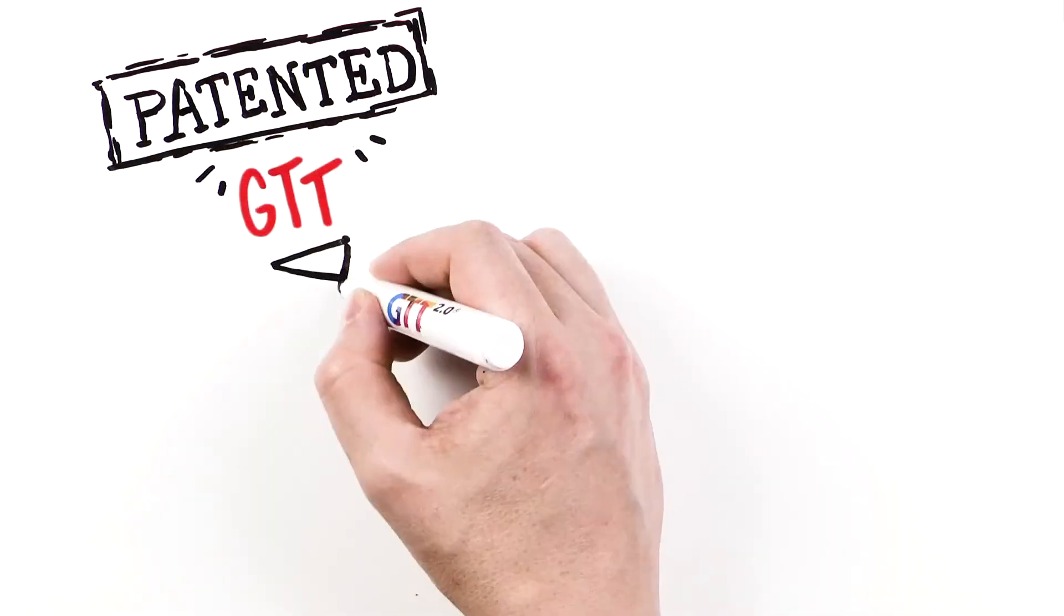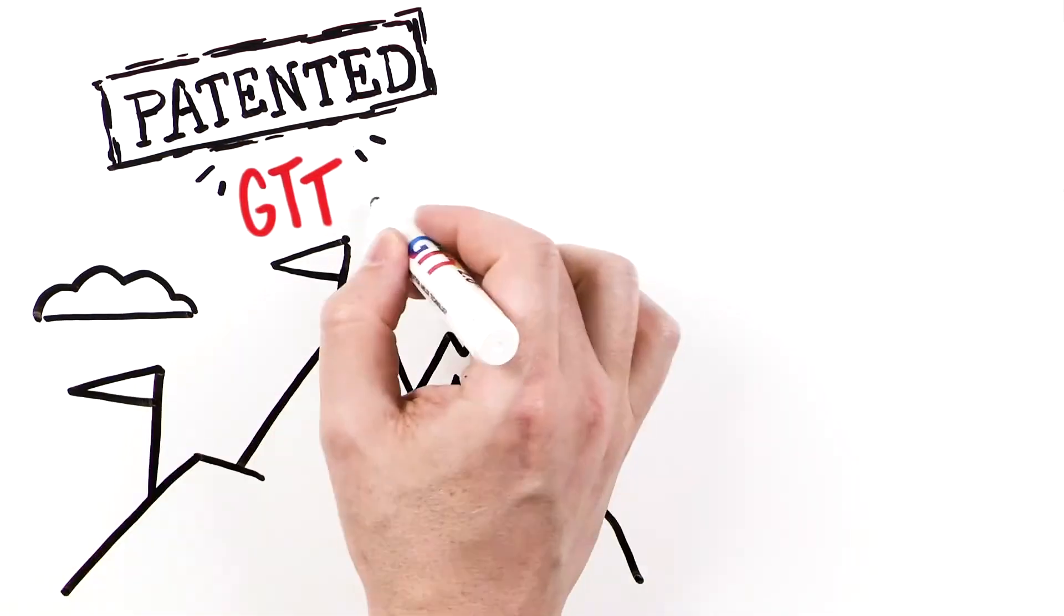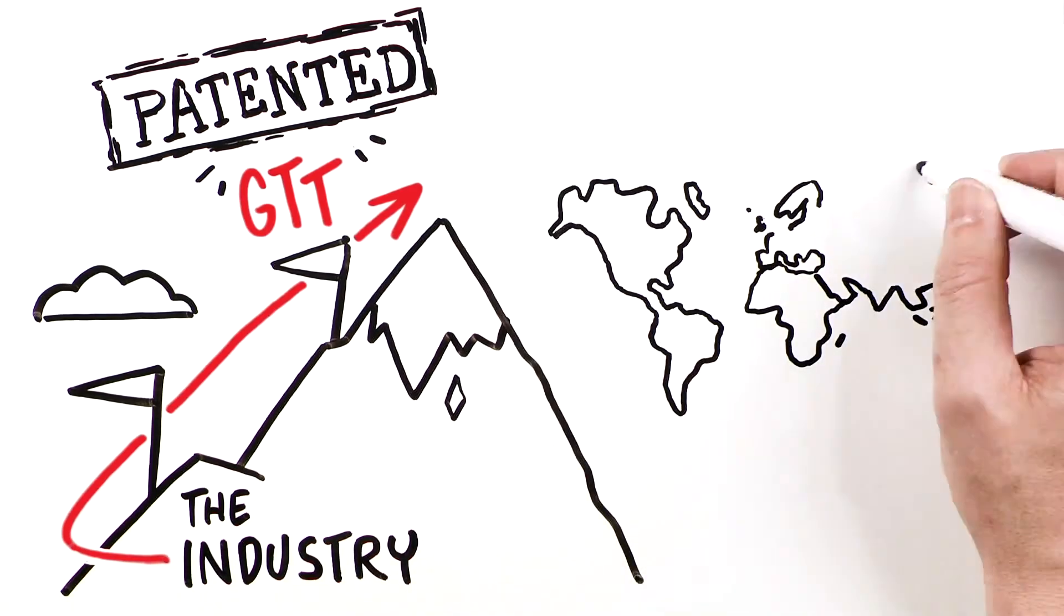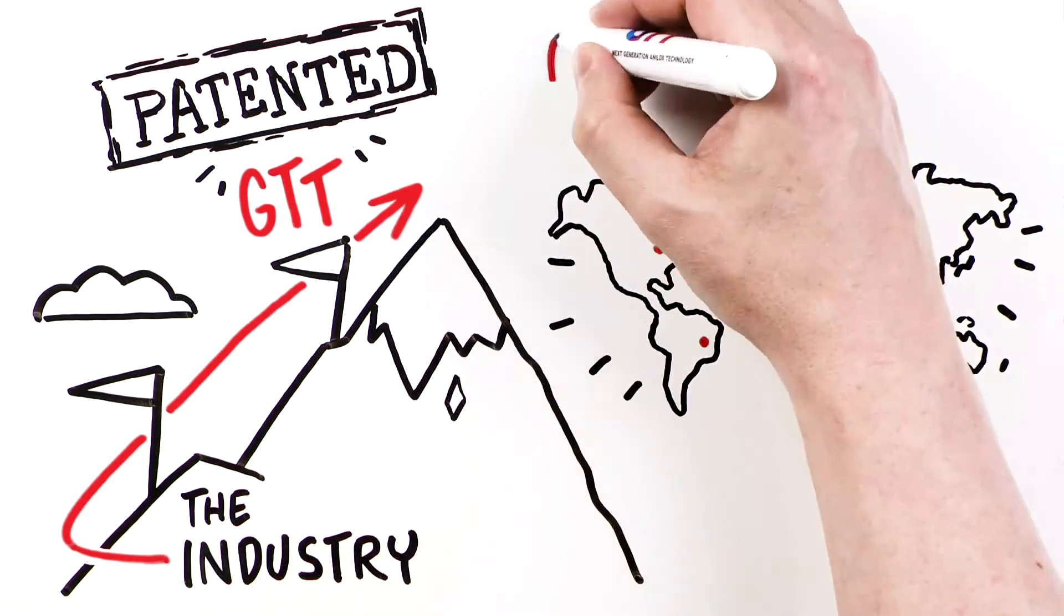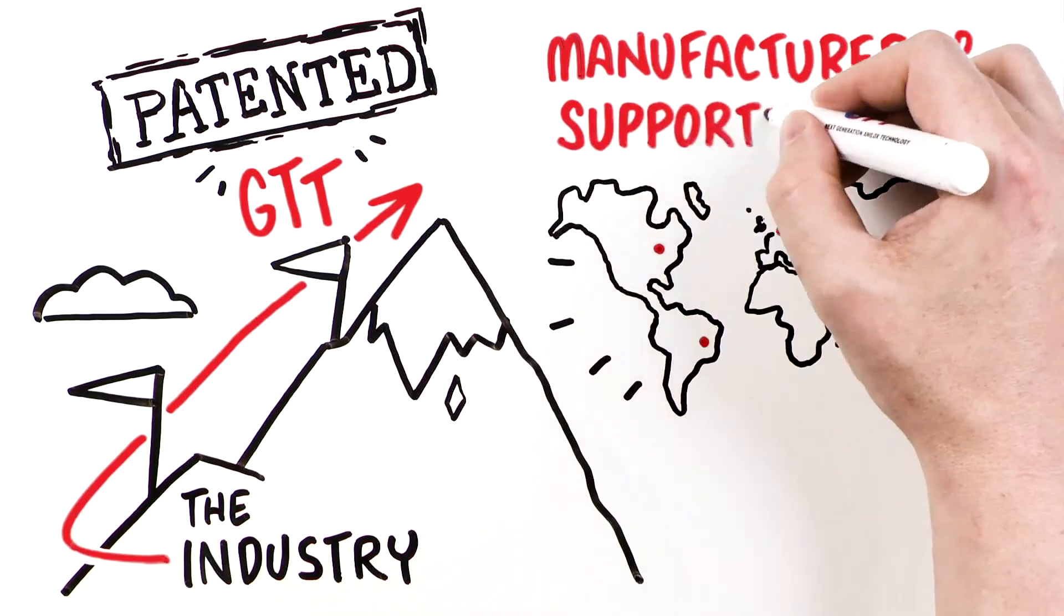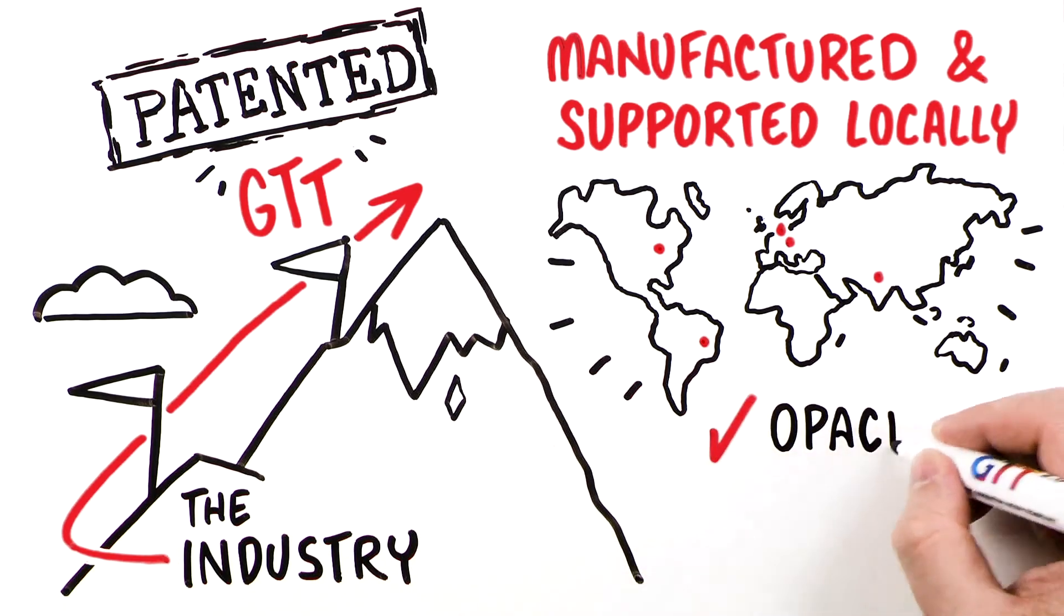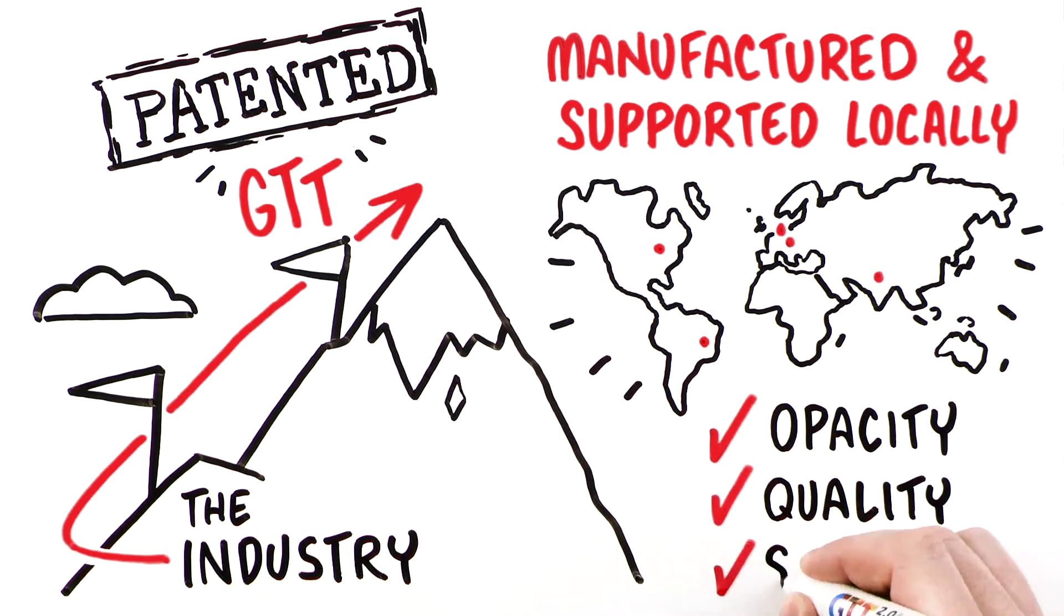The patented GTT engraving continues to evolve and improve, setting the trend for the industry. Available from any of Apex's five production facilities and manufactured and supported locally from a strong global organization, GTT 2.0 is truly the choice for opacity, quality, and savings.